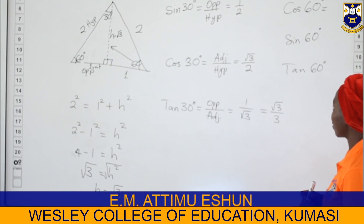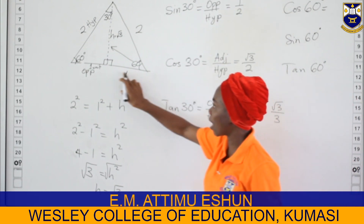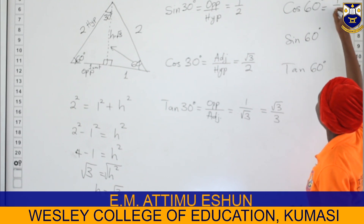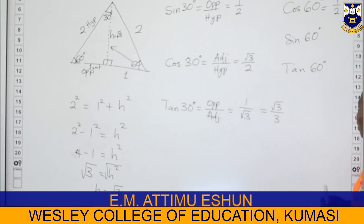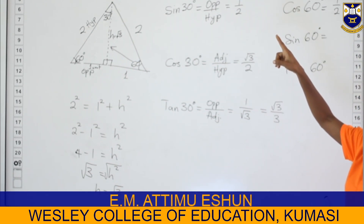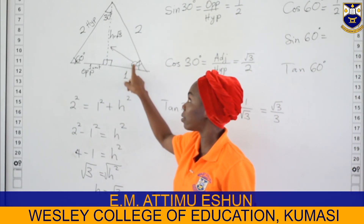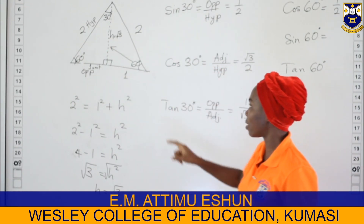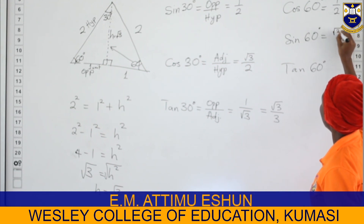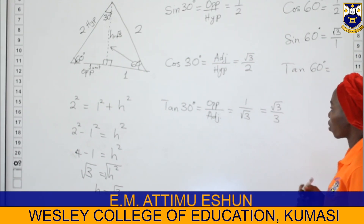Cos 60 equals the adjacent side divided by the hypotenuse. The adjacent is one and the hypotenuse is two, so cos 60 equals one half. For sine 60, we take the opposite divided by the hypotenuse: the opposite to angle 60 is root three and the hypotenuse is two, so sine 60 equals root three divided by two.